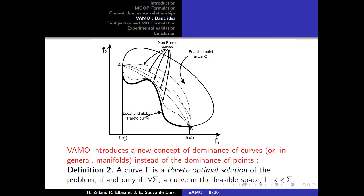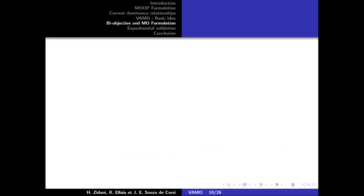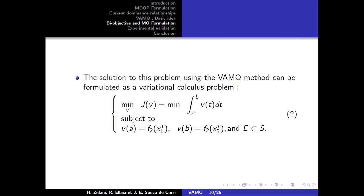For a bi-objective optimization problem, the Pareto front becomes a curve, and the area limited by the Pareto curve and the two axes F1 and F2 appears as minimal among all the possible curves formed by points of the Pareto space joining the ideal points A and B. The solution to this problem using the VAMO method can be formulated as a variational calculus problem.